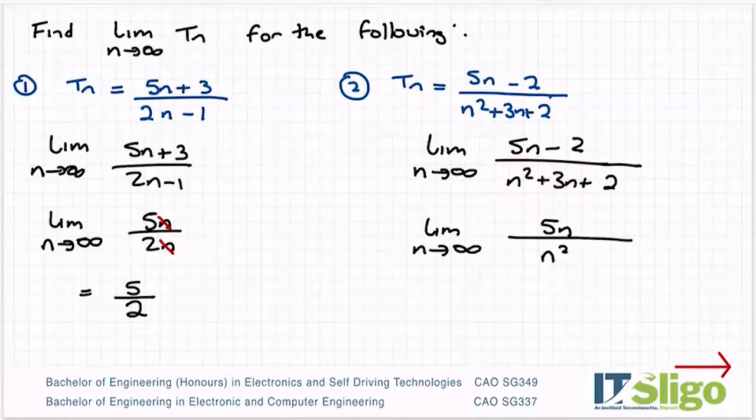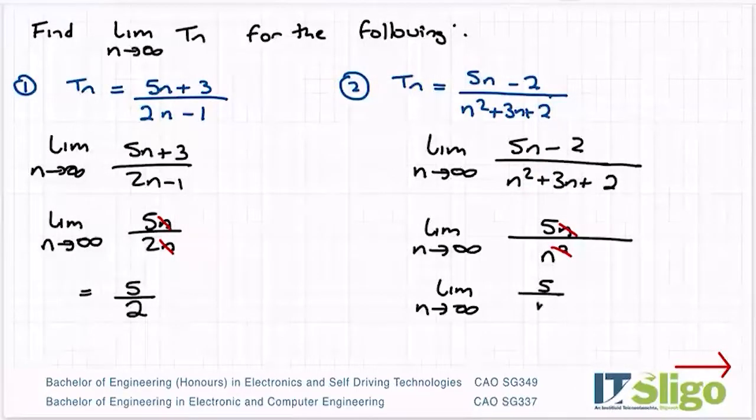Once you square a very large number, you get a much, much bigger number. So adding on 3n and 2 is again not going to make too much difference. So I'm going to cancel one of the n's and then have a look at it. So the limit as n tends to infinity of 5 over n.